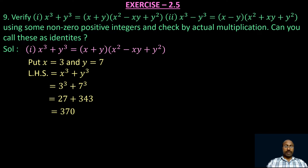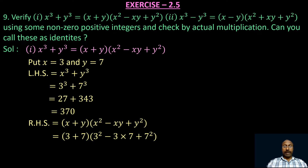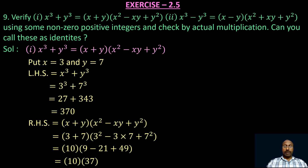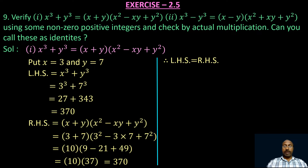Now let us find the value of RHS, which is (x + y)(x² - xy + y²). Substituting x = 3 and y = 7, we get (3 + 7)(3² - 3×7 + 7²) = 10 × (9 - 21 + 49) = 10 × 37 = 370. We got LHS = 370 and RHS = 370, that is LHS = RHS. Hence, the given equation is proved.